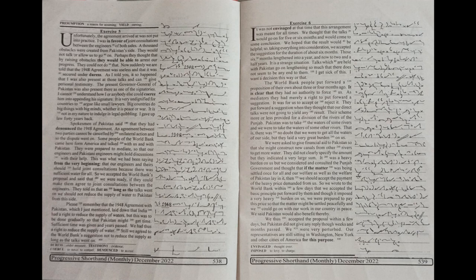We were asked to give financial aid to Pakistan so that she might construct new canals from other rivers to get more water. They indicated a very large sum. We considered and consulted the Punjab government and thought that if the matter was being settled once for all and our welfare as well as the welfare of Pakistan lay in it then we should accept the payment of the heavy price demanded from us. We wrote to the World Bank within a few days that we accepted the basic principles put forward by them.